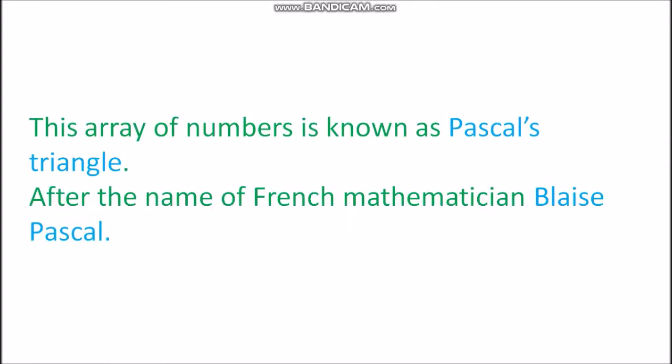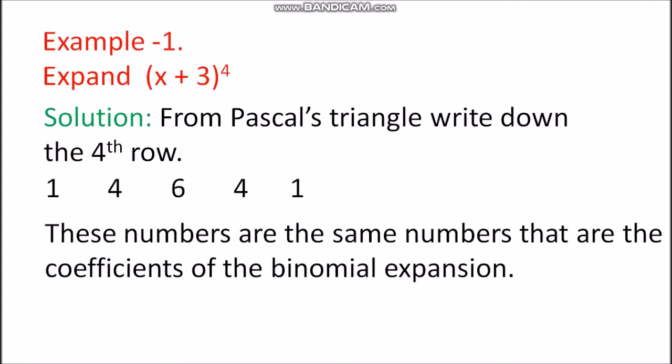This is named after the French mathematician Blaise Pascal — this is Pascal's Triangle. We can use it to find the coefficients for (x + y)^n. For example, for (x + 3)^4, we look at the 4th row of Pascal's Triangle: 1, 4, 6, 4, 1. These are the coefficients of the binomial expansion.